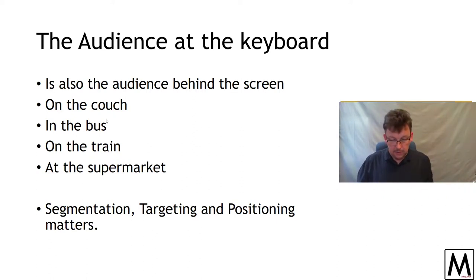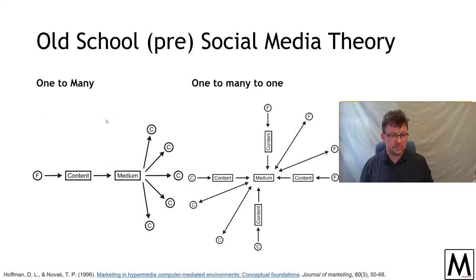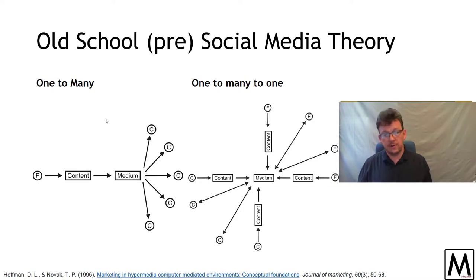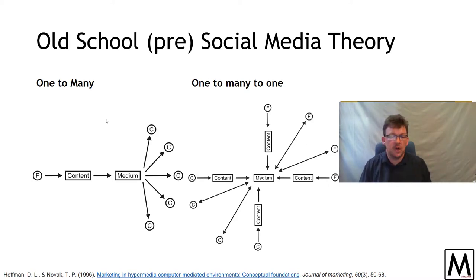Your segmentation, targeting, and positioning matter because the person at the keyboard is a real person who goes out somewhere. Basically, when it comes down to it: use the same toolkit — segmentation, targeting, and positioning. The final theory to engage with is an old-school framework from 1996 that's relevant today. We came up with some stuff very early in the history of the internet and got it right — the Hoffman and Novak model, possibly the most cited article in marketing history, about the ways to communicate.